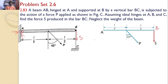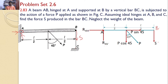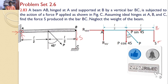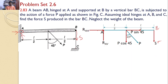At A, there is a hinged support which gives two reactions — a horizontal reaction RAH and a vertical reaction RAV. The inclined force P can be resolved into two components: a vertical component P cos 45 and a horizontal component P sin 45, along the bar AB. To find only the force S, we take moments directly about point A. RAH, RAV, and P sin 45 all pass through point A, so they introduce no moment.